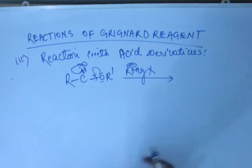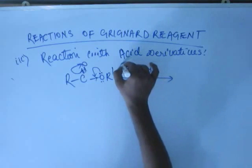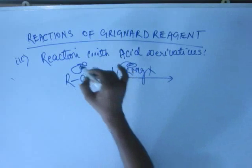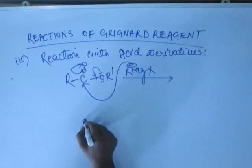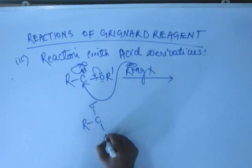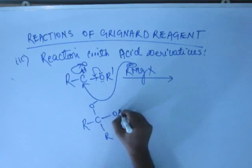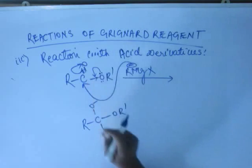In the case of Grignard reagent, it will come in and attack this carbon, resulting again in removal of the pi bond into the orbital of Oxygen. So again we will have a negative charge on Oxygen, a bond between carbon and the alkyl group of the Grignard reagent, and this OR' bond will remain as it is.